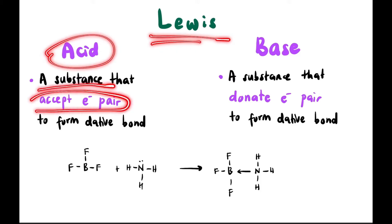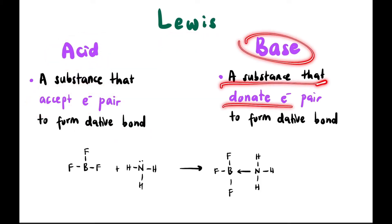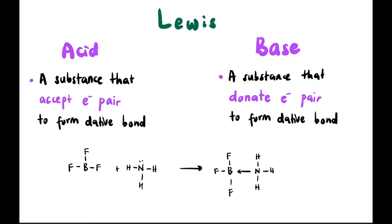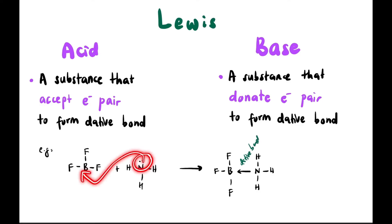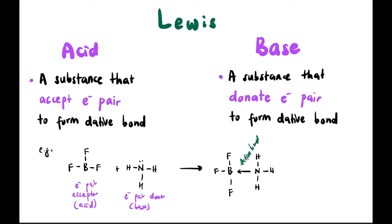According to Lewis, an acid is a substance that accepts an electron pair to form a dative bond, while a base donates an electron pair to form a dative bond. For example, BF₃ + NH₃ → BF₃·NH₃. The dative bond points toward B, making B the electron pair acceptor — so BF₃ is the Lewis acid and NH₃ is the Lewis base. Lewis acids can be cations or neutral compounds; Lewis bases can be anions or neutral compounds.